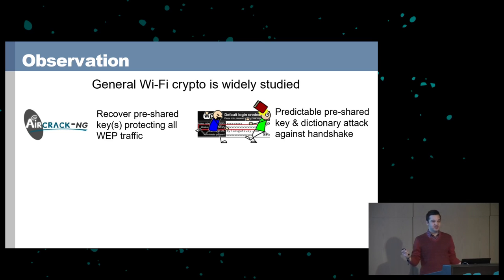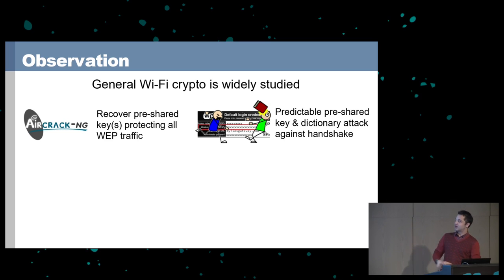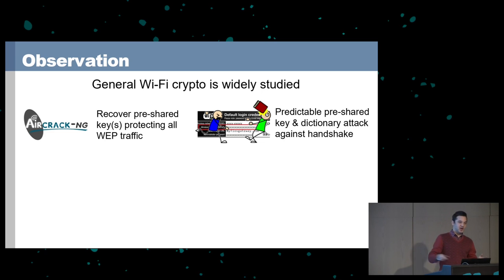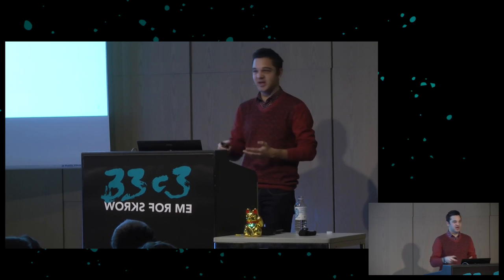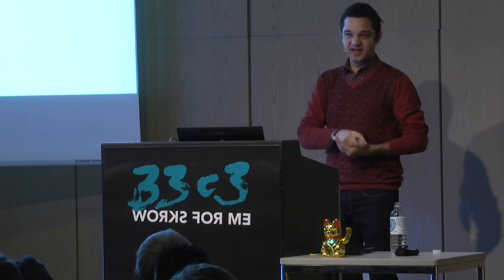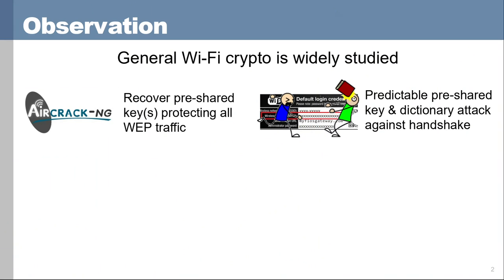You also have dictionary attacks against the WPA2 handshake. The way this works is you force a client to disconnect from the network and it reconnects, performing a fresh handshake to negotiate session keys. As an attacker, you can capture the four messages exchanged in this handshake and then perform offline guessing attacks at the password. If the handshake had been better designed, these dictionary attacks would not have been possible.